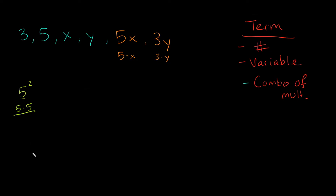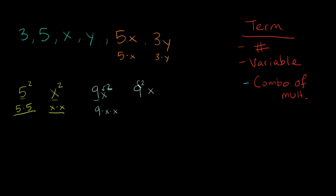So we could write it as 5 squared. Or I could have x squared, which is the same thing as x times x — a combination of multiplying two variables together. Or I could combine them, putting something like 9x squared, which is the same thing as 9 times x times x. Something important to realize: this exponent 2 only applies to the x — you don't apply it to the 9. It just depends what the exponent is attached to. So if I had 9 squared x, then the exponent is attached to the 9, giving us 9 times 9 times x. Both 9x squared and 9 squared x are examples of terms.